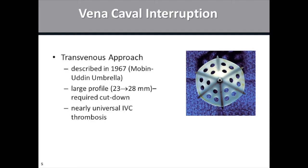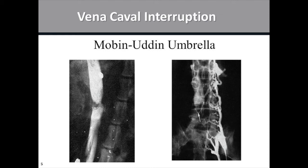The transvenous approach came about with the Mobin-Udin umbrella in the late 1960s. This required a large cutdown and was a 23 to 28 millimeter device. The design was on the right idea, but the channels were relatively small and led to flow restriction, causing stasis within the filter and almost universal inferior vena cava thrombosis. The umbrella deflected clot peripherally, causing turbulence. On cavagram, you can see flow interference just above the filter, and ultimately the vena cava became entirely thrombosed with collaterals developing through the left iliac vein.